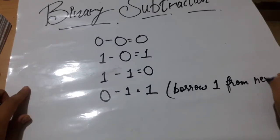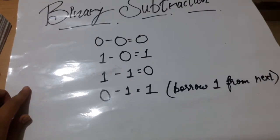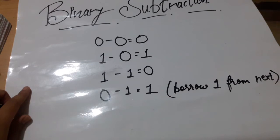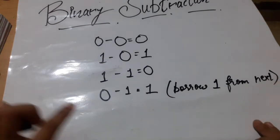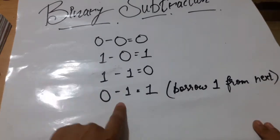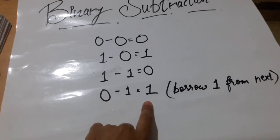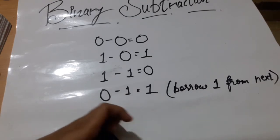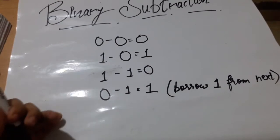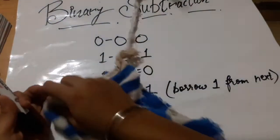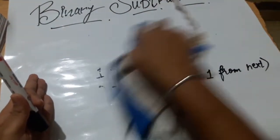As we have seen in addition, we carry 1 when there is 1 plus 1. But in subtraction, if 0 minus 1 comes, the answer will be 1 and we will borrow 1 from the next number. We will see how this works in our questions. So we will start solving our questions.